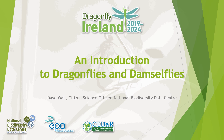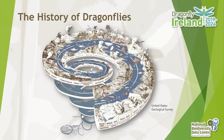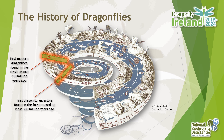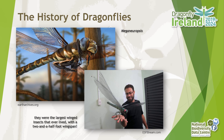Welcome to an introduction to dragonflies and damselflies. During this short talk, I'm going to introduce you to the history of the dragonflies and damselflies, and to the differences and similarities between the two groups. The first dragonfly ancestors are found in the fossil record around 300 million years ago — that predates the age of the dinosaurs, so this is an extremely ancient group. The first modern dragonflies are found in the fossil record about 250 million years ago, and those dragonflies look very similar to the dragonflies and damselflies we see today.